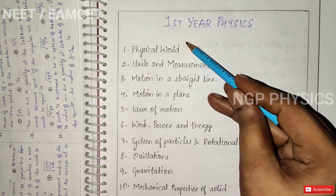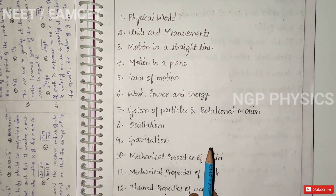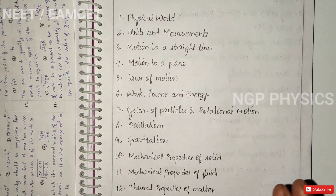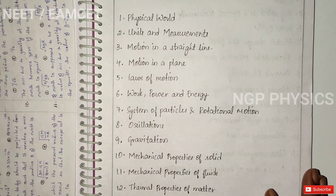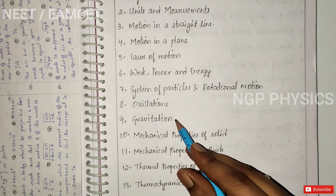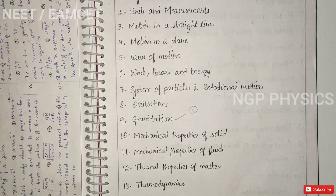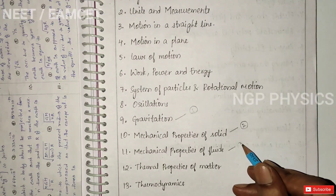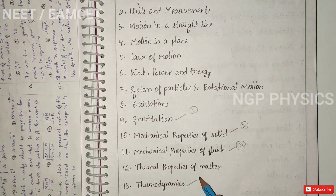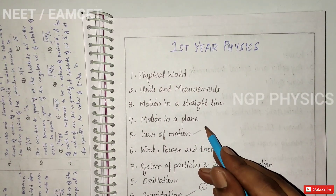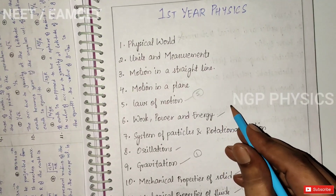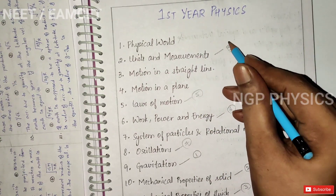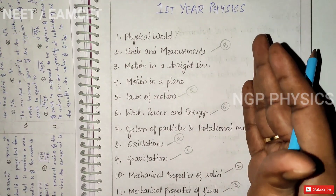Today I will show you the first priority of the chapter order. The first priority chapters are: Solids and Elasticity, third is Fluids, fourth is Thermodynamics, next is Laws of Motion, next is Work and Energy at number six, Oscillations is seven, and eight is Units and Measurements. We will cover these chapters in this order.